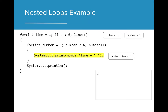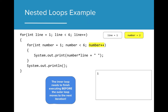Since both have been initialized at 1, the value of number times line is 1, and 1 is printed in the console. Note that we add an open quote space close quote at the end of the string so that when the next value is printed, there's a space between them. Because we are inside of the inner loop, the next execution is a call to the inner loop increment, which increases number by 1. Before we can move on to the code outside the inner for loop, the inner for loop needs to complete its execution.